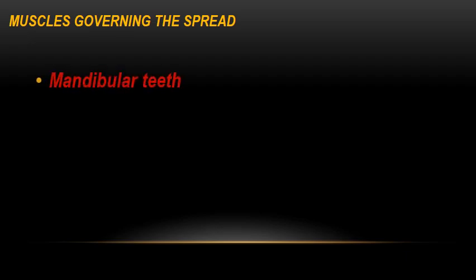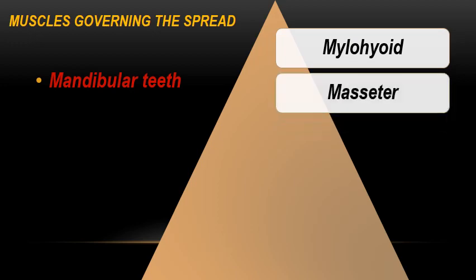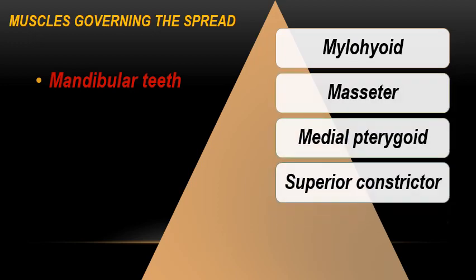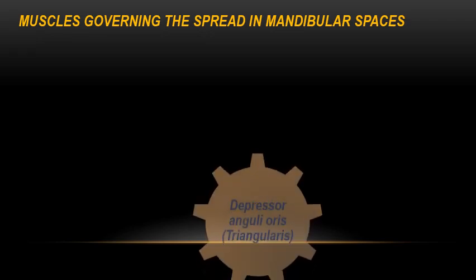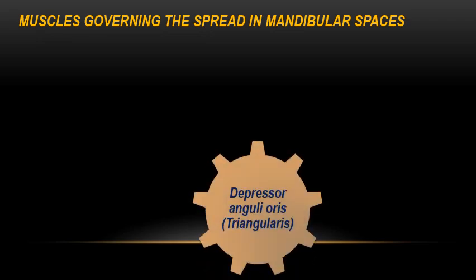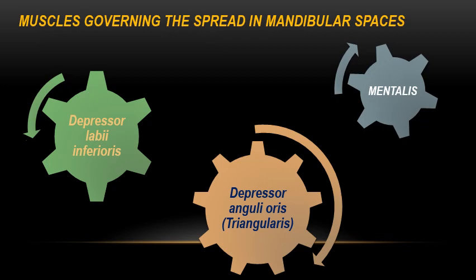Let's first know what are the muscles governing the spread of infection when it comes from the mandibular teeth. We have the mylohyoid, the masseter muscle, medial pterygoid, superior constrictor of pharynx, and the orbicularis oris. Furthermore, we have the depressor anguli oris muscle — sometimes called the triangularis — the depressor labii inferioris, also referred to as quadratus labii inferioris, and last but not least, the mentalis muscle.